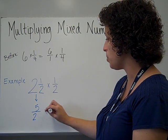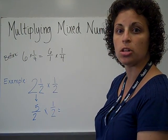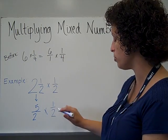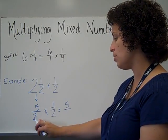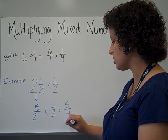Then we're going to multiply it by the other fraction using our same steps. Numerator times numerator is 5, denominator times denominator, in this case, is 4.